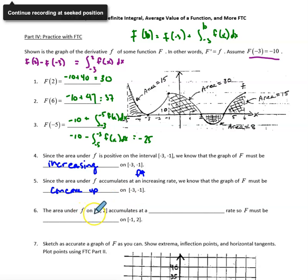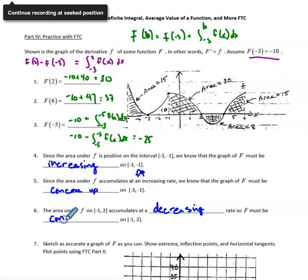On the interval from negative 1 to 2, this area accumulates at a decreasing rate, meaning little f is decreasing. Little f is going downward here, so big F must be concave down. We ask these questions to remind you that when graphing an antiderivative, you focus on the sign of the derivative function and whether the derivative function is increasing or decreasing, because the culminating question is asking us to graph the antiderivative function.